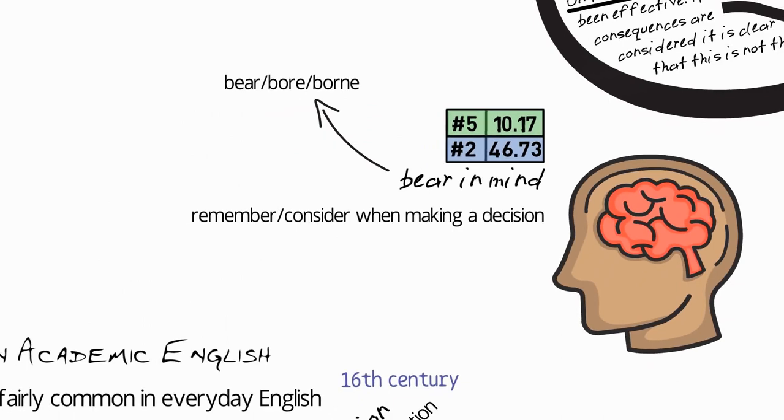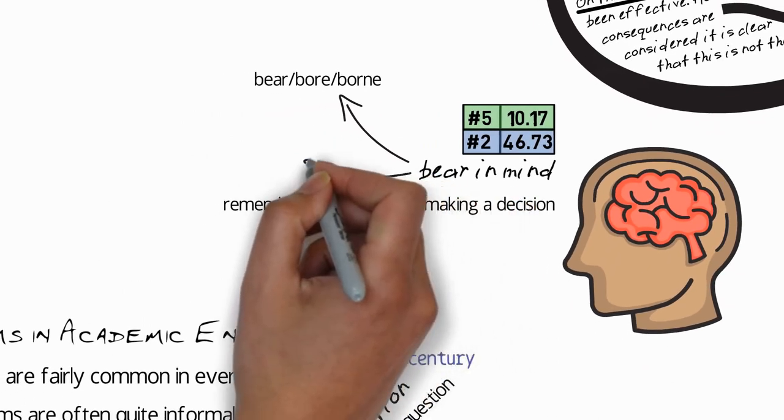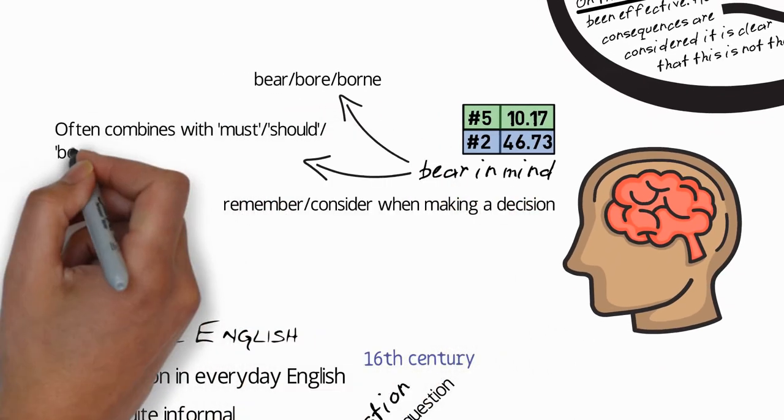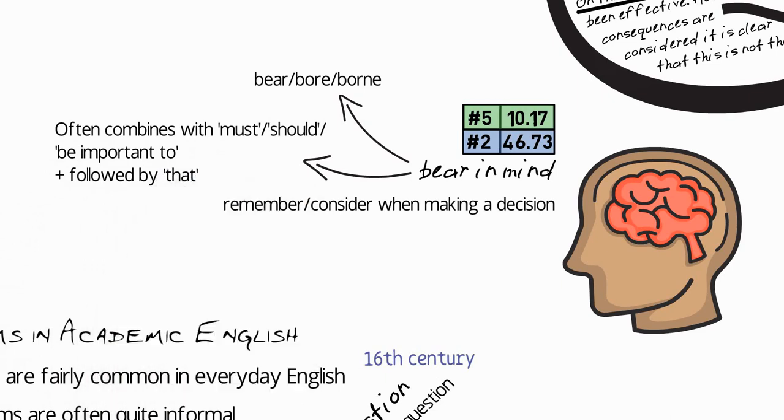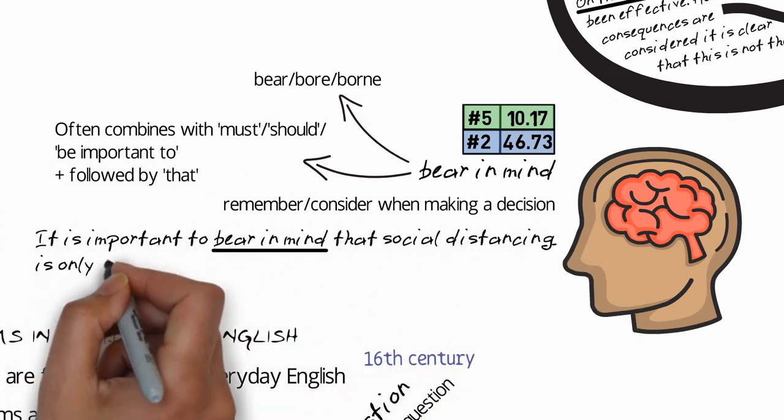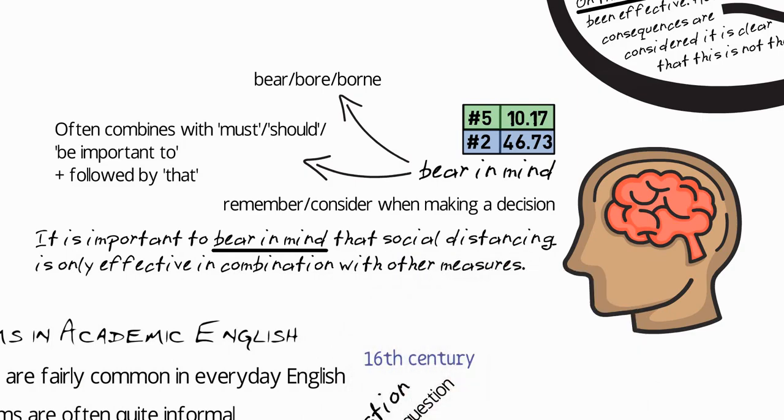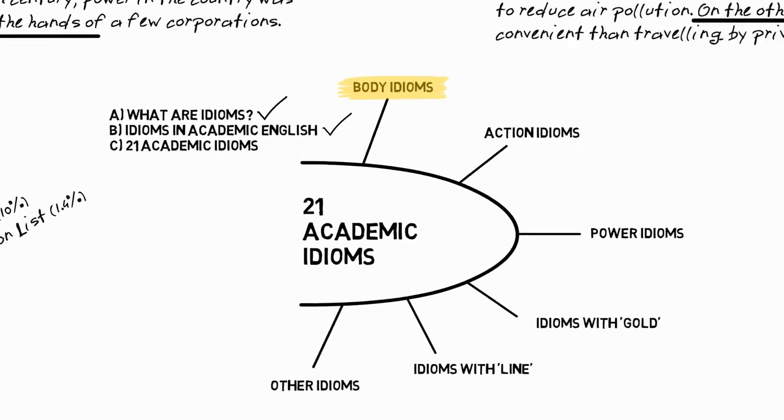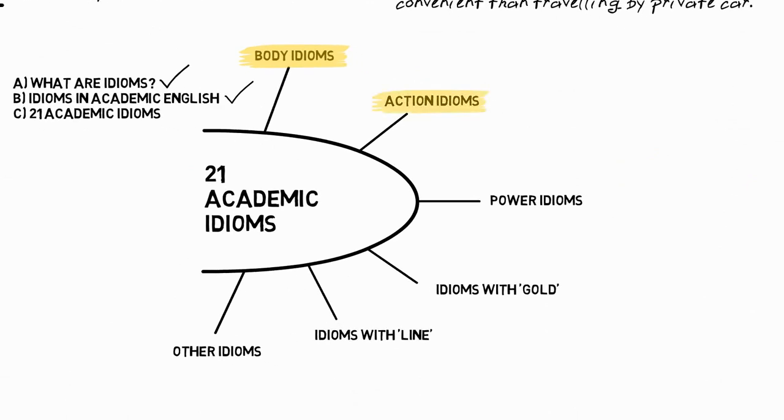And this means to remember or consider when making a decision. And this is the fifth most common idiom for academic writing and the second for academic speaking, so this is a very common idiom. A couple of grammar and usage points here. First, the verb bear is an irregular verb: bear, bore, born. Second, the phrase bear in mind often combines with the word must or should or be important to, and it's usually followed by that as we'll see in the example. It is important to bear in mind that social distancing is only effective in combination with other measures.